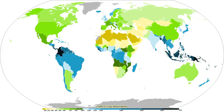Precipitation is a major component of the water cycle and is responsible for depositing fresh water on the planet. Approximately 505,000 cubic kilometres of water falls as precipitation each year — 398,000 cubic kilometres over the oceans and 107,000 cubic kilometres over land. The globally averaged annual precipitation is 990 mm, but over land it is only 715 mm. Climate classification systems such as the Köppen climate classification use average annual rainfall to differentiate between differing climate regimes.